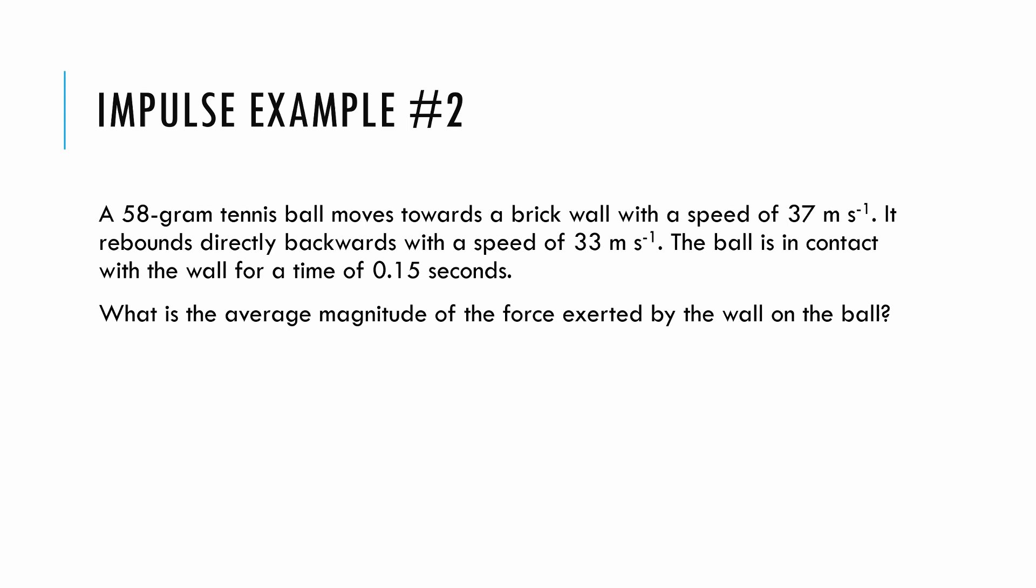Here's another one where we can deal with impulse. I have a tennis ball moving towards a brick wall with a certain speed, it rebounds backwards with a slightly smaller speed, and I have the time that I'm in contact for. I want to find the average force exerted by the wall on the ball. This is a very common momentum problem. The IB loves a rebound problem because there's one trick to it that is sneaky, and that is picturing what's happening here. I come in with an initial velocity to the right, and I rebound with the final velocity to the left. So I have to deal with that direction when I deal with my change in momentum.